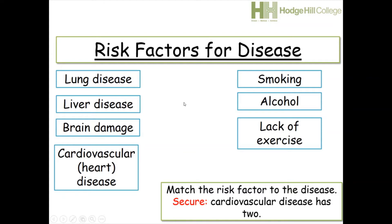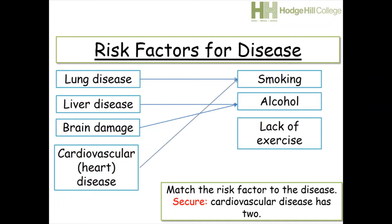Lung disease — the risk factor is smoking, so if you smoke you've got an increased chance of developing lung disease. Liver disease — if you drink alcohol you've got an increased chance of developing liver disease. Similarly with brain damage — excessive alcohol gives you an increased chance of developing brain damage. Cardiovascular disease has two risk factors: smoking and lack of exercise. If you don't exercise, you've got an increased chance of heart disease, and if you also smoke, you've got an even greater chance.